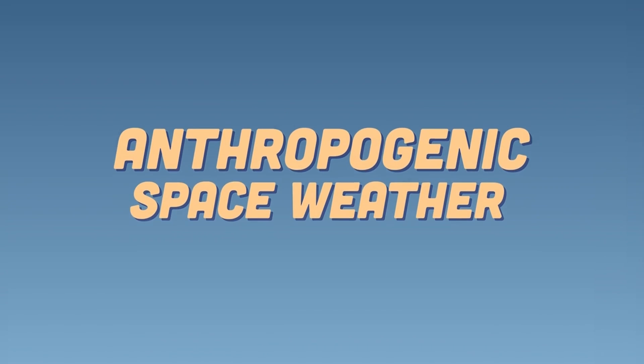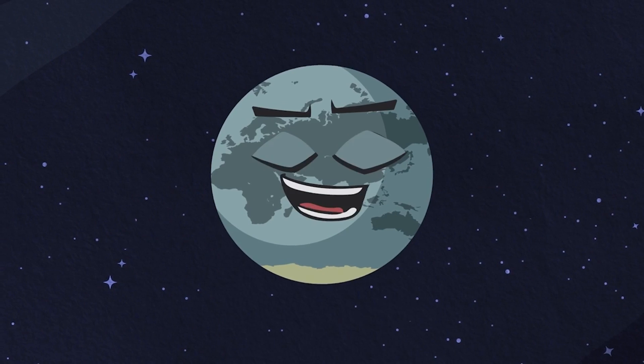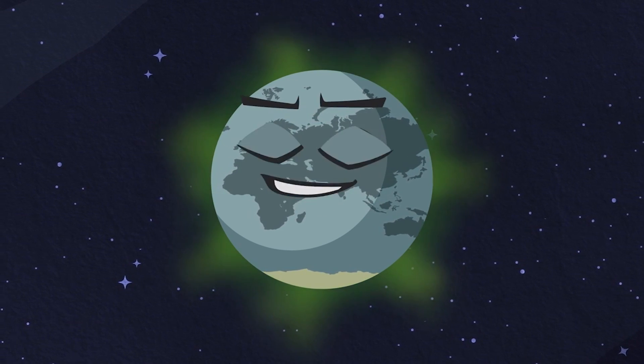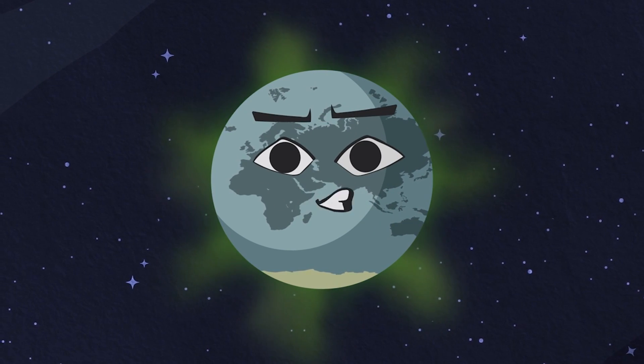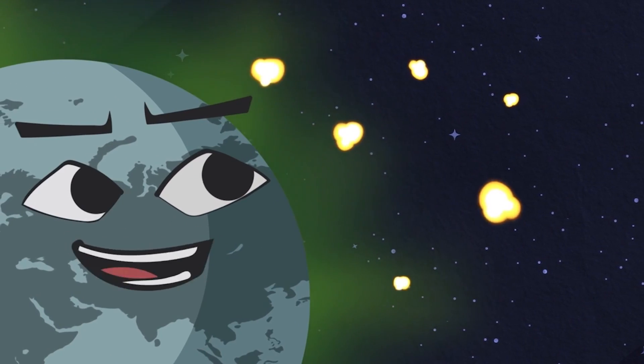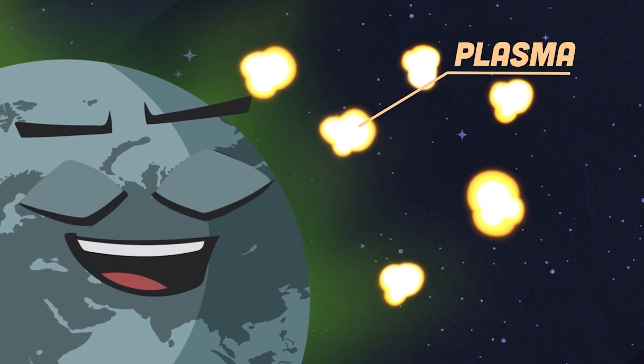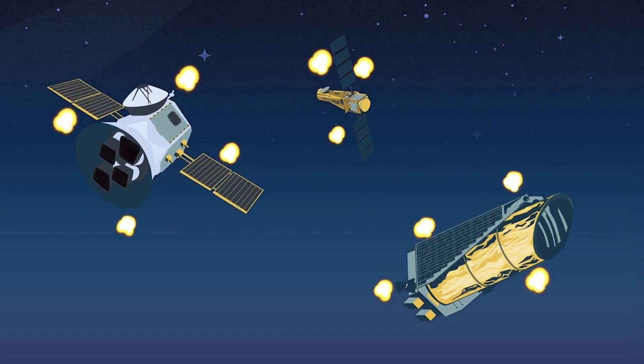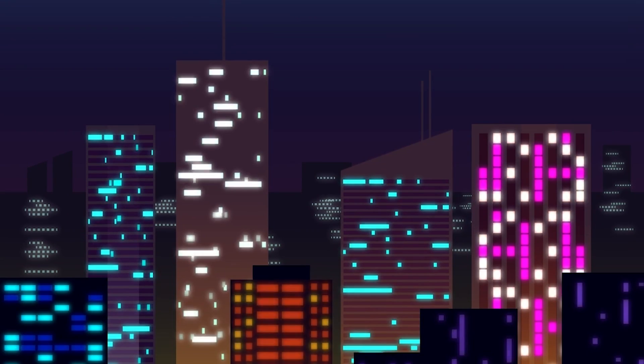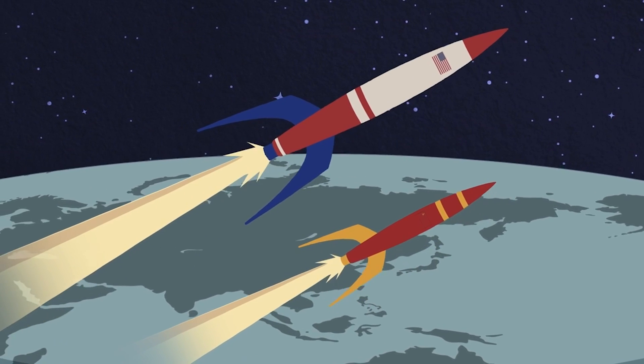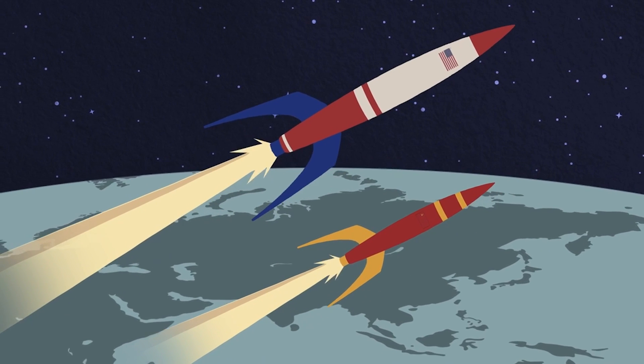What is anthropogenic space weather? We shall see. These are environmental pollutants from human activity. Space weather refers to Earth's surrounding near space. Humans have studied plasma in this place. These plasma blasts can affect satellites in space and power grids on Earth, disturbing the human race.